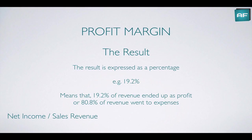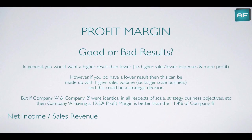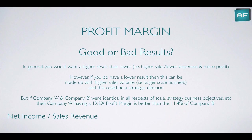Or in other words, 80.8% of revenue went to expenses — calculated as 100% minus 19.2%. In general, you would want a higher result than a lower result. This would mean you would have higher sales, or lower expenses, and more profit from your business, which is generally what we're after.